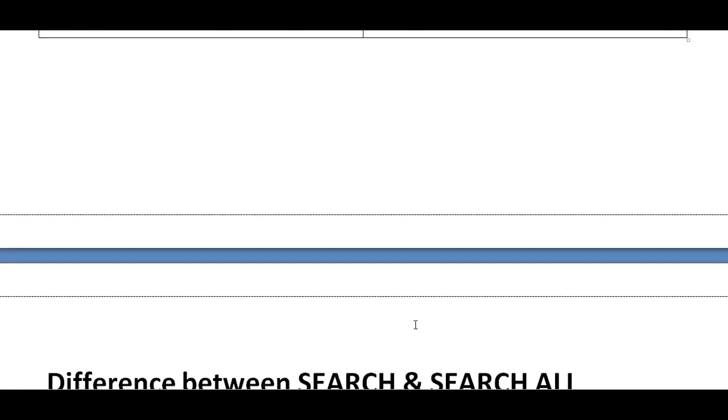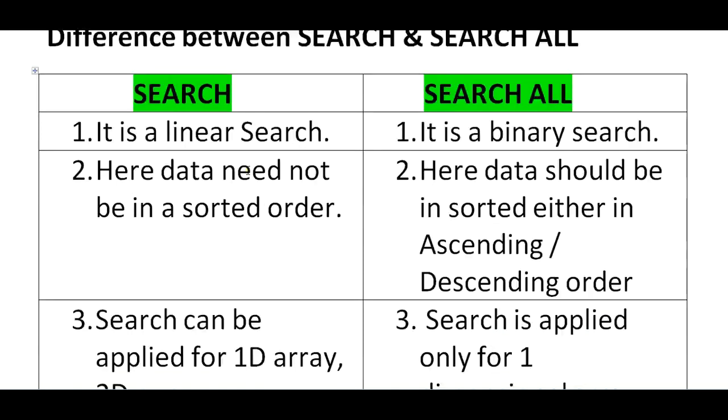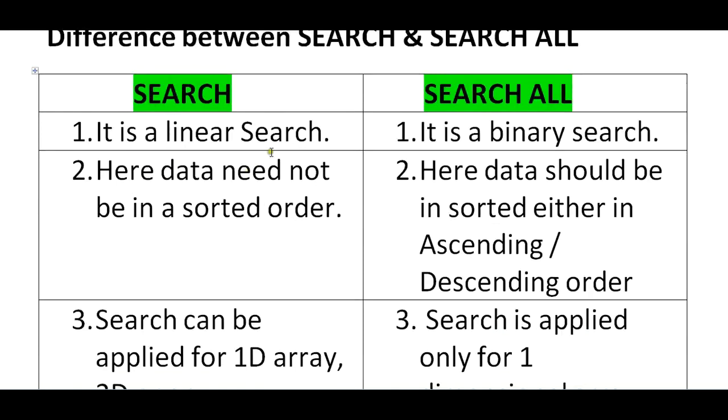So let's see the difference between search and search all. So when you say search it is a linear search. When you say search all it is a binary search. What's exactly the difference here is.